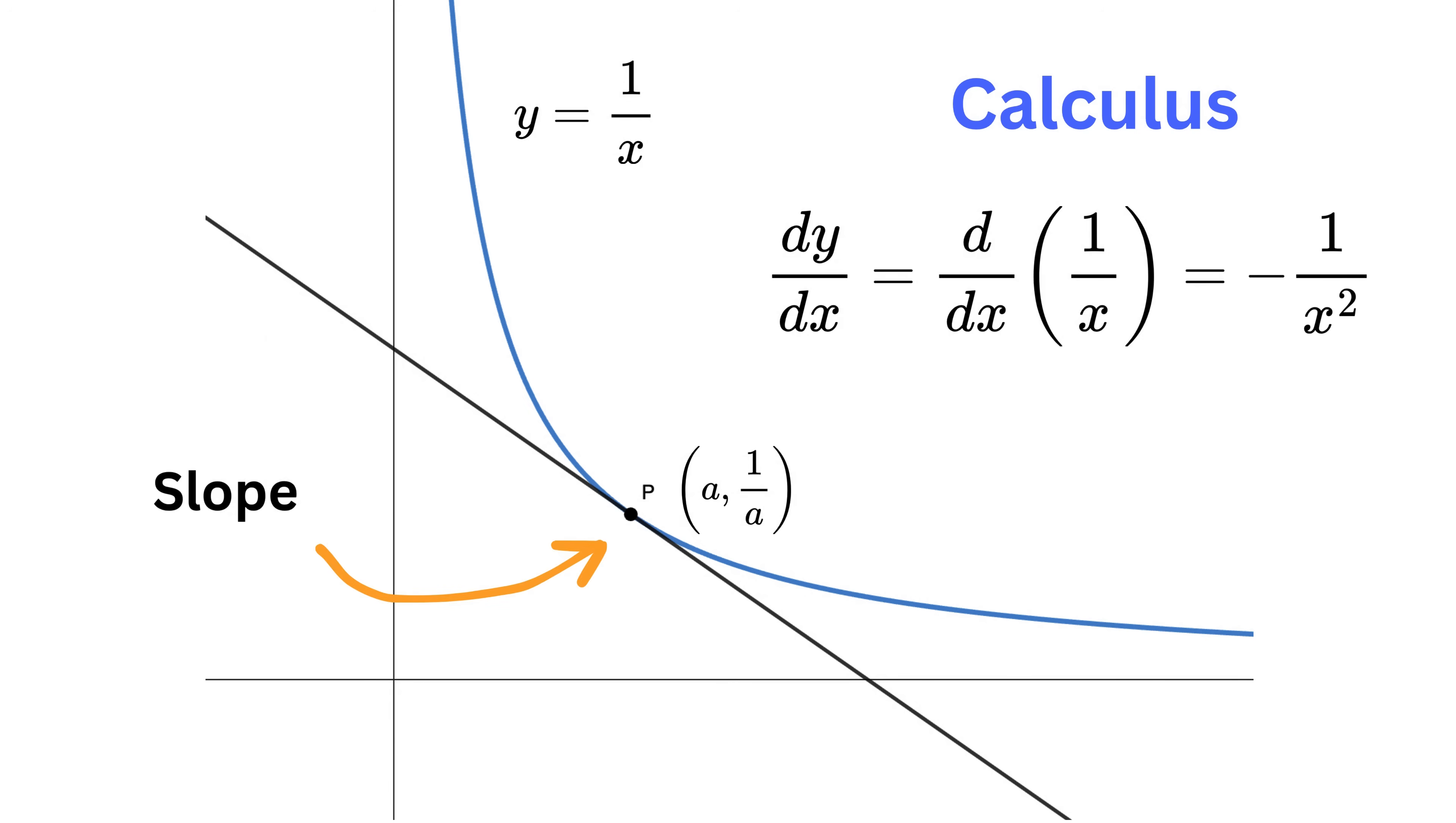This means that at any point on the curve, the slope of the tangent will be minus 1 divided by the square of the x-coordinate of that point. Let's take a specific point on the curve, say the point a and 1 by a. The slope of the tangent at this point will be minus 1 over a squared. Perfect, we've got the slope.